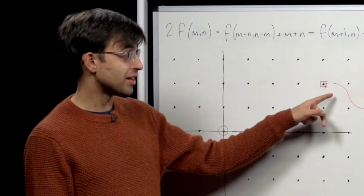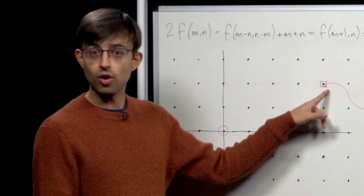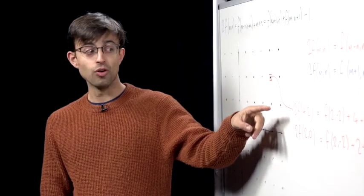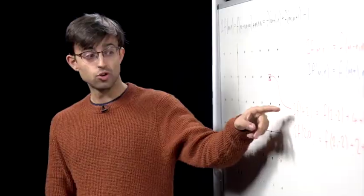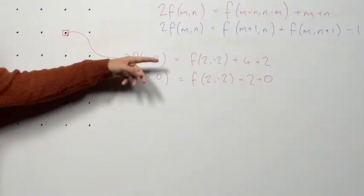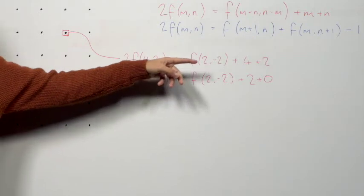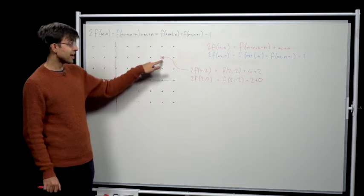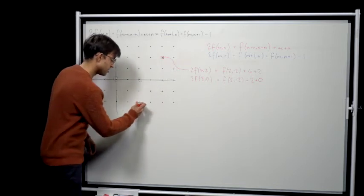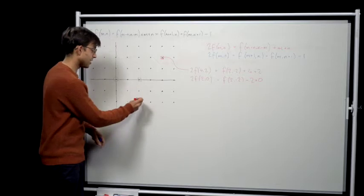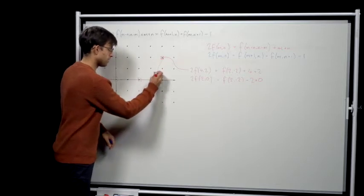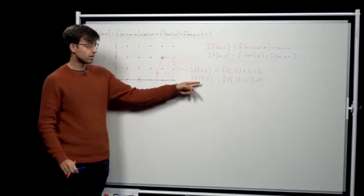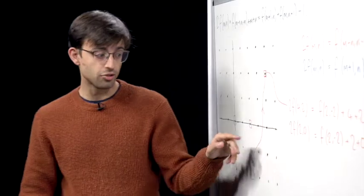Let's go back to our friend f(4,2) and think what happens if we apply the red equation. By taking m equals 4 and n equals 2, we find that twice the value of f(4,2) is f(2, -2) plus 4 plus 2. So we can think of this as saying that the value of f here is determined by the value of f here.